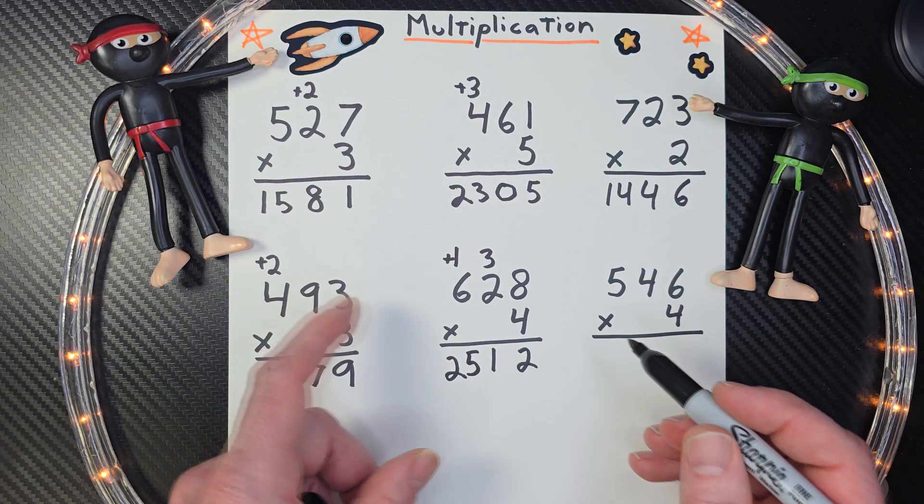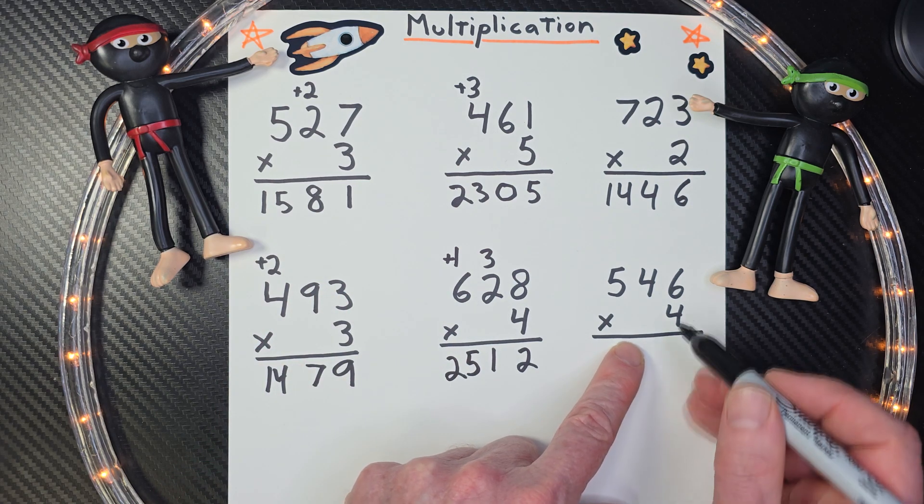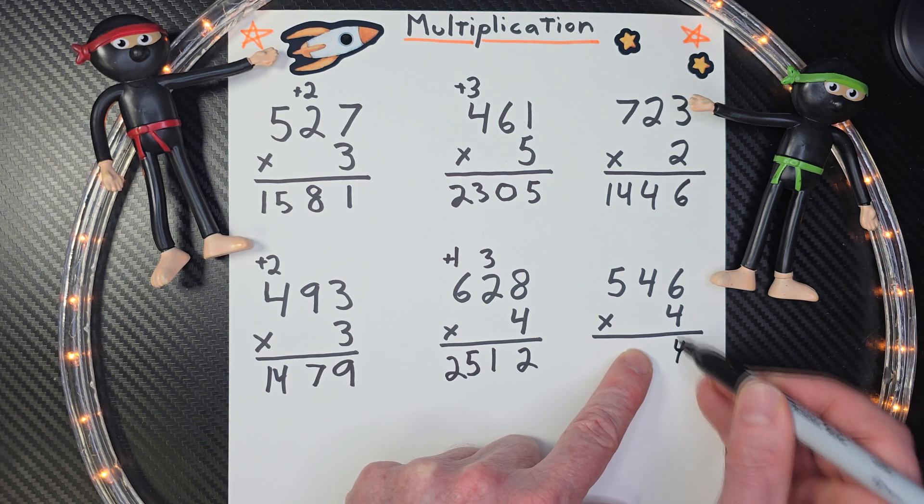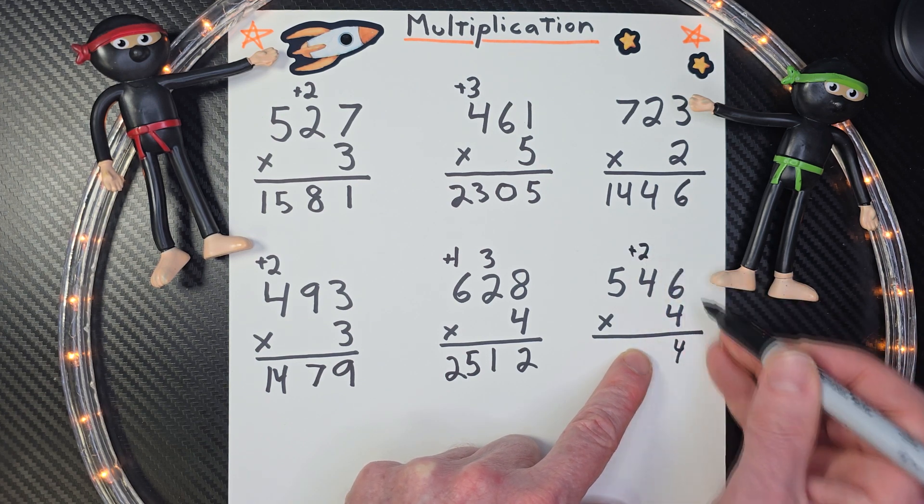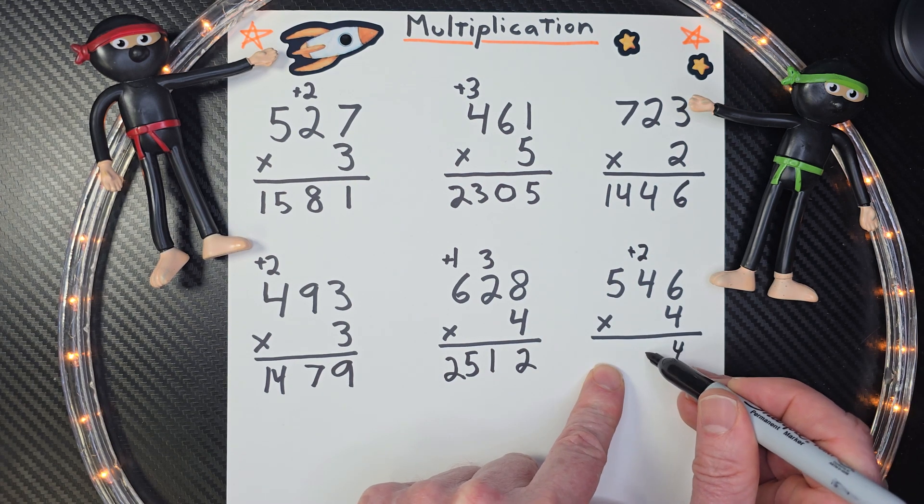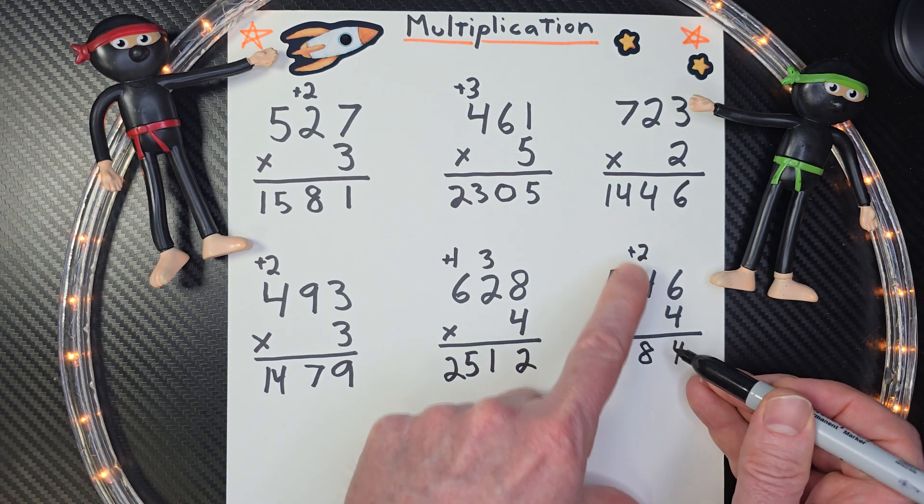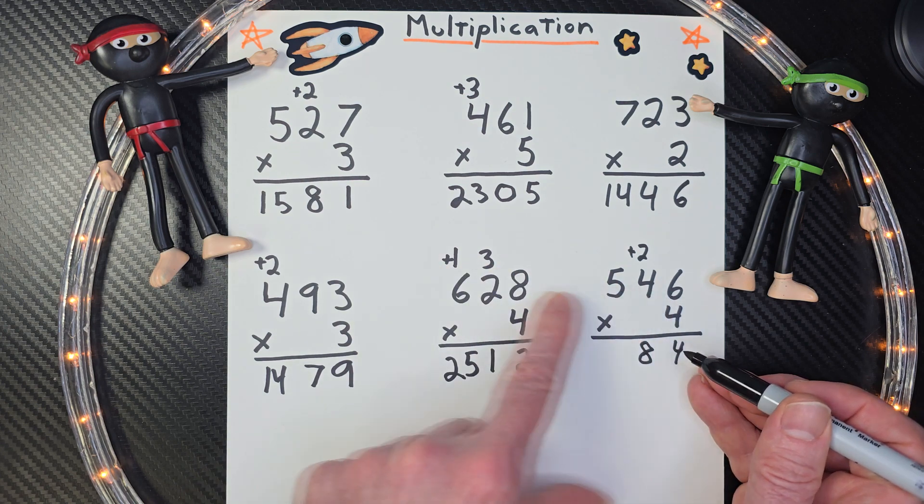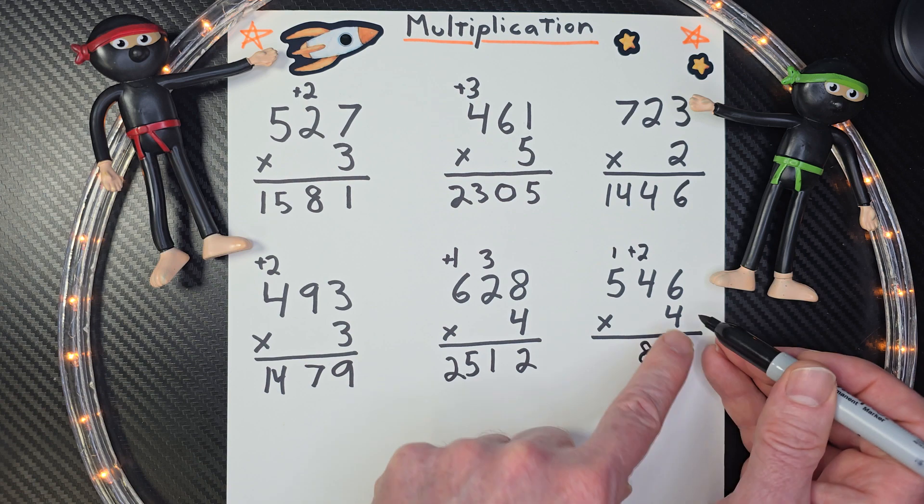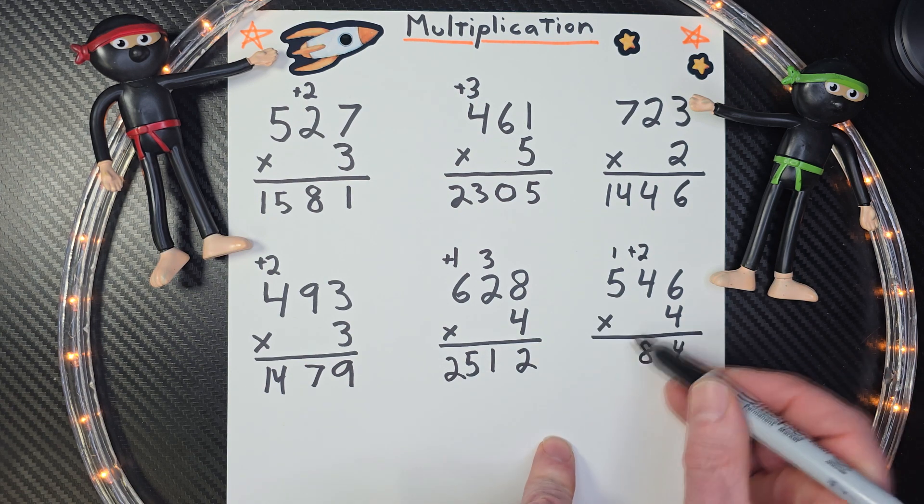How are you guys doing so far? We have one more left. Let's do it together. 4 times 6, 24. Put the 2 up here. 4 times 4, 16, 17, 18. I tell my students I want to always see their work up here. I always want to see their work. So I put the 18, the 1 up there, 4 times 5 is 20 plus the 1, 21.